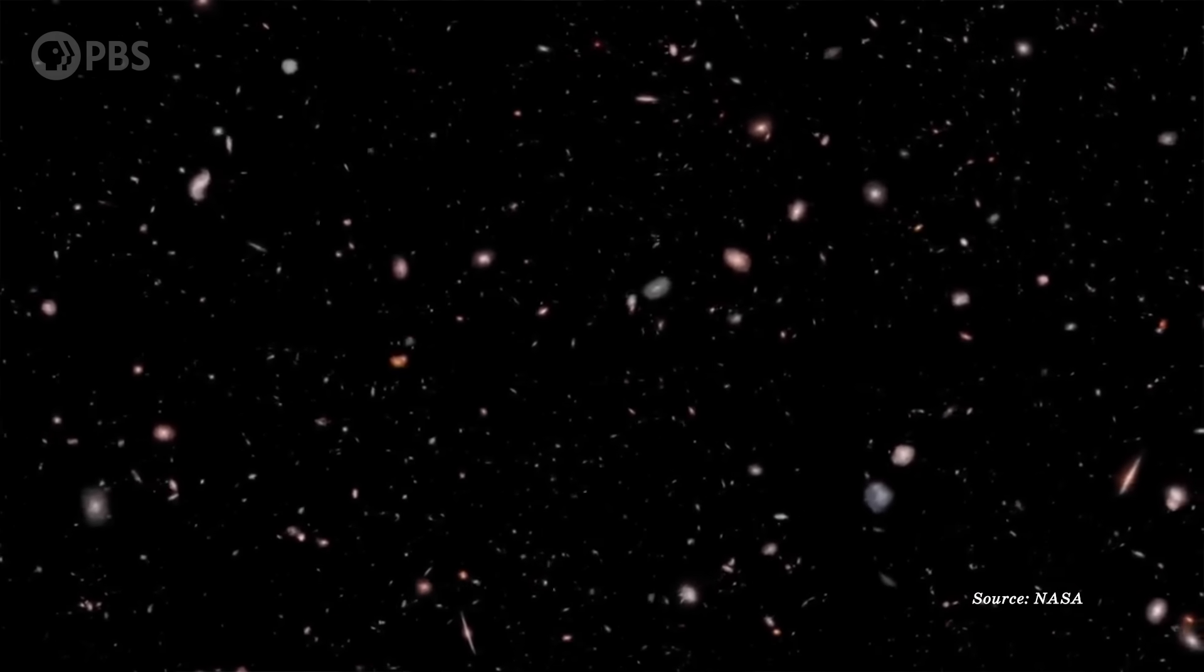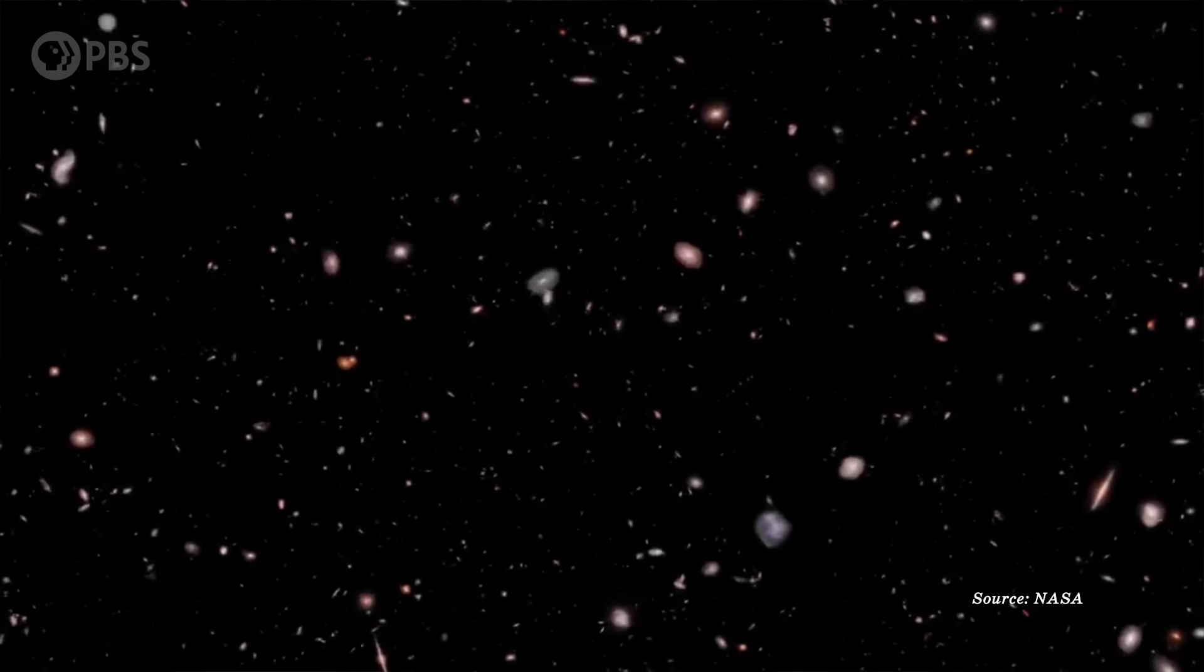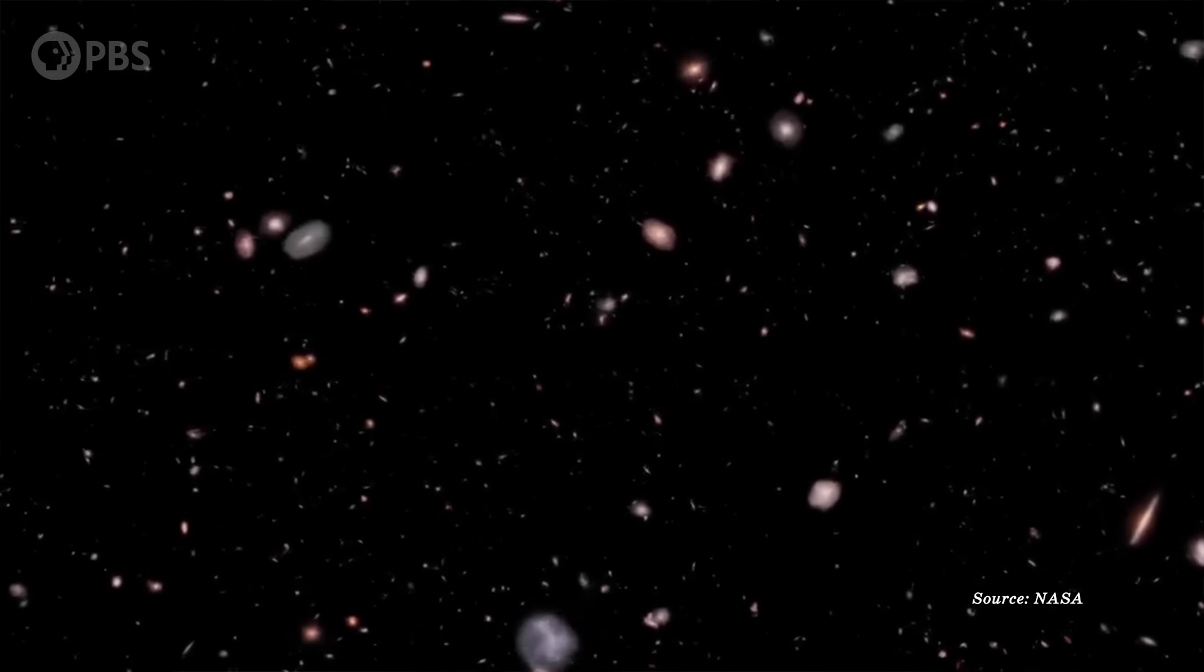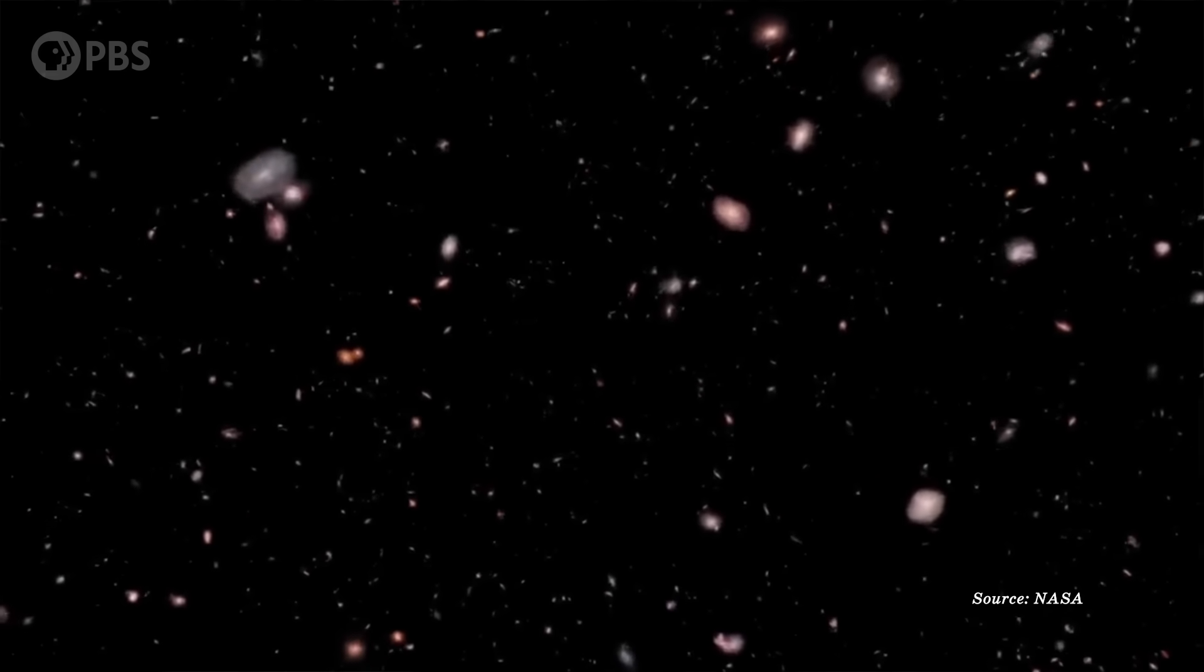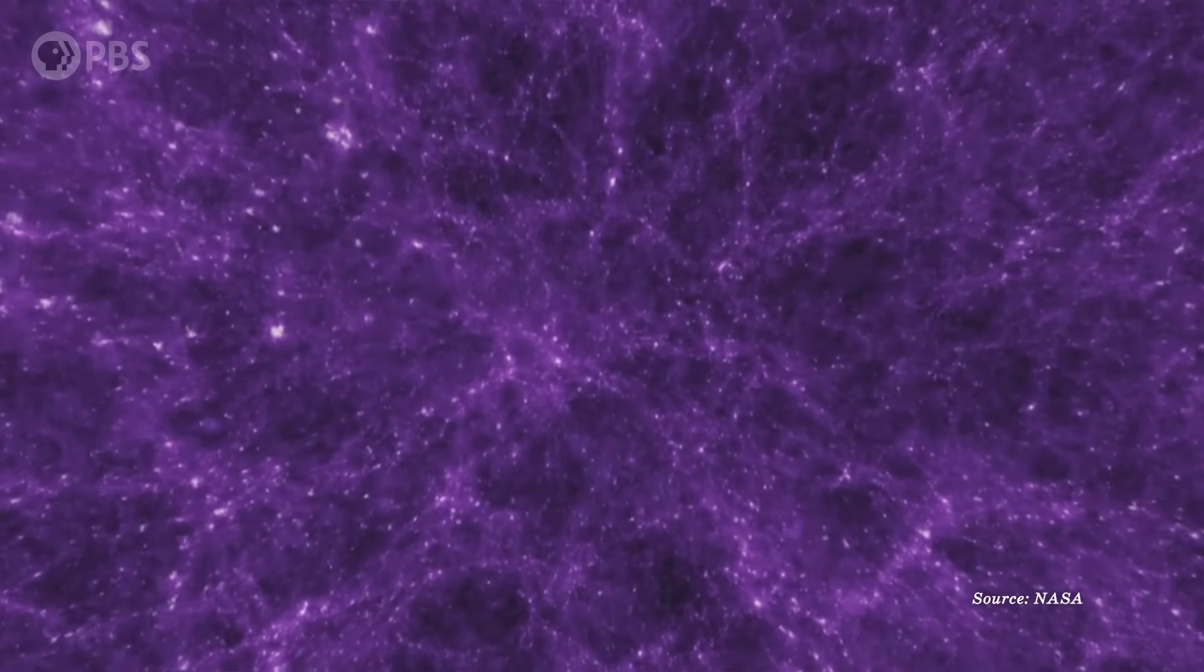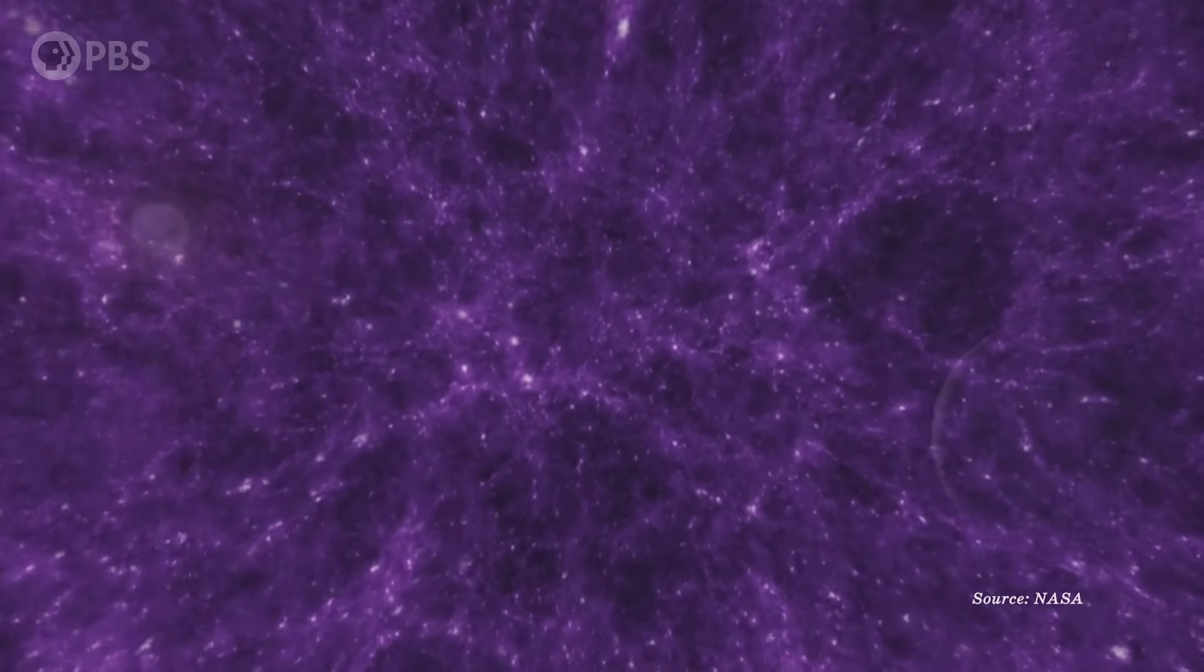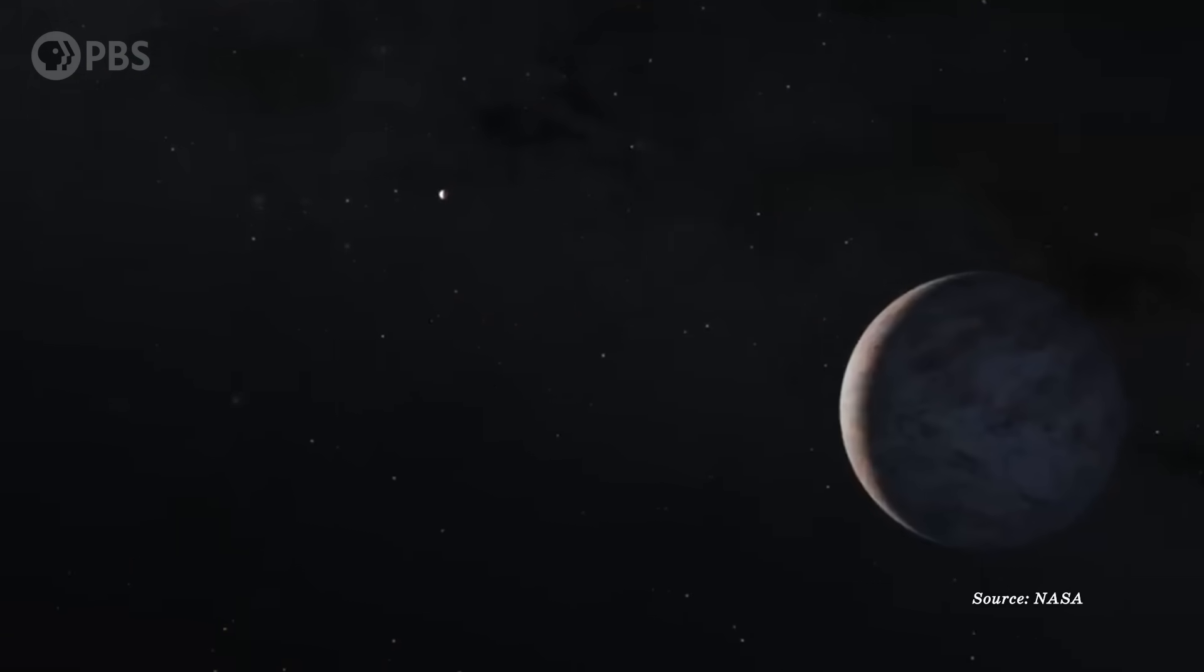So by decoding bits of information missing from sunlight, we've figured out the makeup of objects all over the universe in places we will never be able to visit or touch. We've discovered bizarre, mind-boggling truths about the fundamental nature of our universe. We may soon be able to search for life on planets that are light years away. All of this is thanks to some electrons swiping little bits of the rainbow.